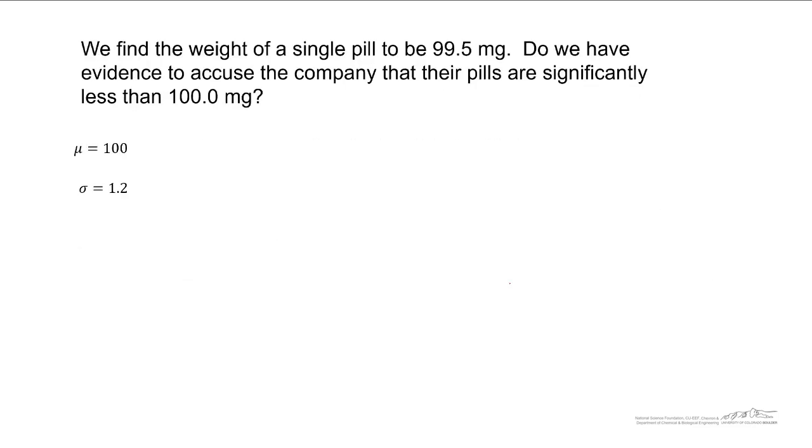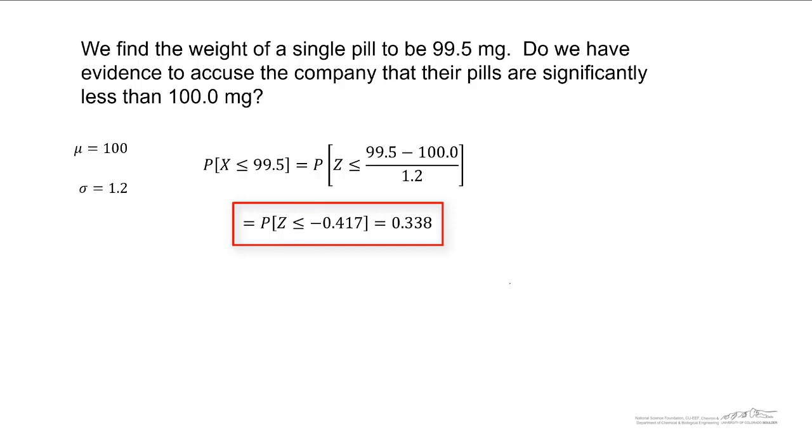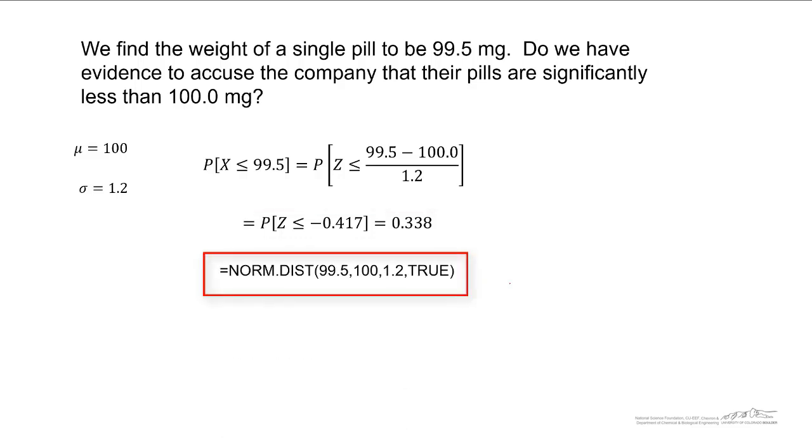So this is a bit of a review. You guys have done this before. We can calculate the probability that x is less than or equal to 99.5. We can convert this to a z value. We can look this up in the tables, and we can find that the probability of this occurring, of getting a pill less than or equal to 99.5 milligrams, that occurs about 33.8 percent of the time. We could also use Excel to solve this problem. And the question is, is this rare?